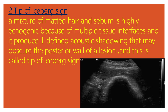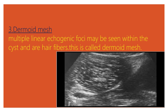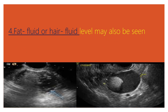This is called the tip of iceberg sign. Number three, dermoid mesh. Multiple linear echogenic foci may be seen within the cyst, representing hair fibers. This is called the dermoid mesh sign. Number four, a fat-fluid or hair-fluid level may also be seen in dermoid cysts.